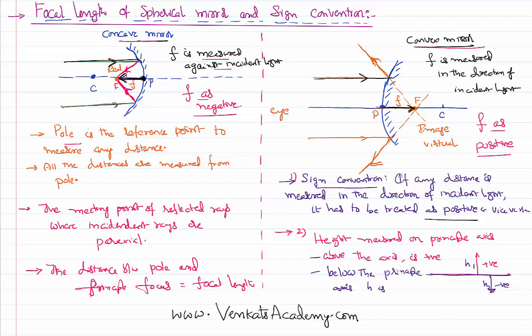This is the sign convention, and this is the way of defining focal length based on the sign convention. The focal length of a convex mirror is positive, the focal length of a concave mirror is negative, and the focal length is the distance between the pole and the principal focus of a given mirror. Thank you for watching — keep coming back for more video lessons.